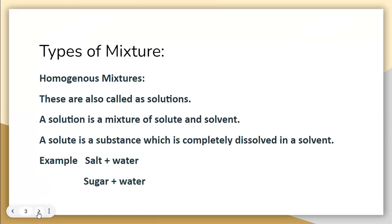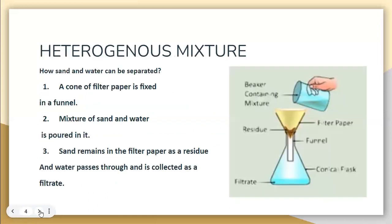The second type is homogeneous mixtures. These are clear solutions. A solution is made up of a solute and a solvent — the solute is the substance dissolved in the solvent. Water is a universal solvent. Dissolving salt or sugar in water makes a clear mixture called a solution, which we also call a homogeneous mixture.